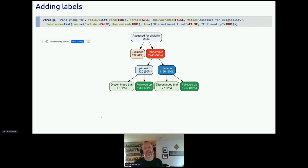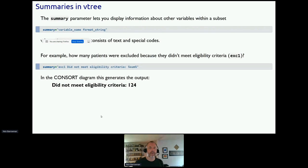So I was just about on the previous slide to say that if we want to look at the reasons for the exclusions and the discontinuations, you need another parameter. And that's called summary. The summary parameter lets you display information about other variables within a subset of the data within a node of the variable tree. And so here, for example, this is the general structure of the summary string. We specify a variable name and a format string, and the format string consists of text and special codes. So, for example, how many patients were excluded because they didn't meet eligibility criteria, EXC1, that's one of the variables. So I specify EXC1, and then this string, and it also has a special code to compute the sum. And if you do that for the CONSORT diagram, it produces did not meet eligibility criteria 124.